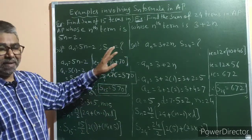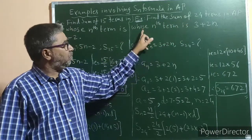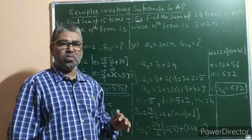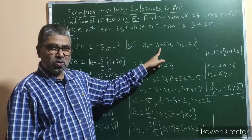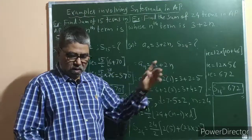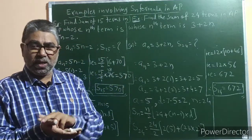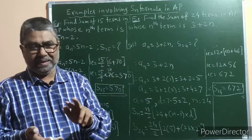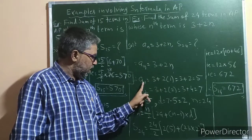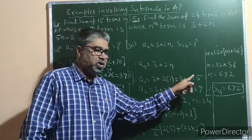The second example is also of the same kind. Find the sum of the first 24 terms of an AP whose nth term is 3 plus 2n. This example is from your textbook. an = 3 + 2n, and S24 is what we need to find. Replace n by 1 to find the first term: a1 = 3 + 2(1) = 3 + 2 = 5.